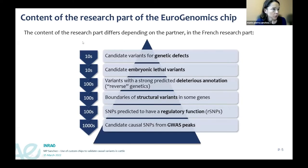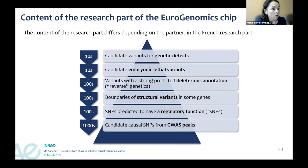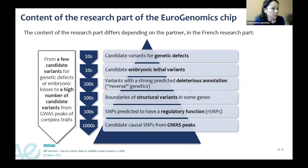The update process involves analyzing the research part of the current version: validated SNPs are moved to the common part, SNPs with technical issues, non-polymorphic or non-validated SNPs are removed, then a new set of variants is selected for in silico design. The chip is manufactured by Illumina, tested for clustering definition, and then used for genetic selection and research. In total it takes about five months between design of a new version and its use. The content of the research part differs by partner; in the French research parts we include candidate variants for genetic defects, variants with strong predictive deleterious annotation, boundaries of structural variants, SNPs predicted to have regulatory function, and candidate causal SNPs from GWAS peaks.